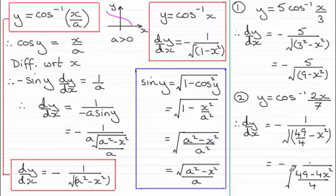And what that's now going to give me, we end up with minus 2 on the top, all divided by the square root of 49 minus 4x squared. And there you have it.